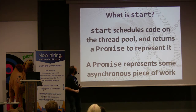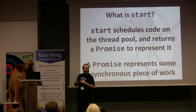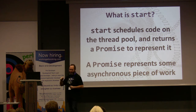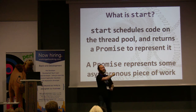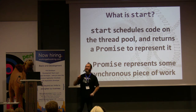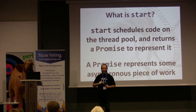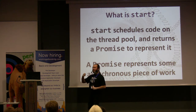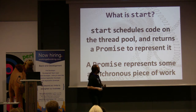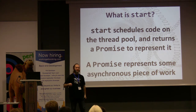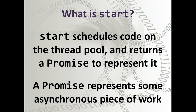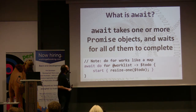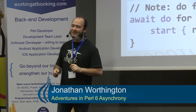Let's talk a bit more about start. Normally when you call a method or subroutine, it does some work and comes back with a result — that's synchronous. Asynchronous is where you say go and do this work and you need to talk about that ongoing piece of work somehow. A promise in Perl 6 is an object that represents a piece of ongoing work that will return a single result. 'Await' takes one or more promises and waits for all of them to complete.